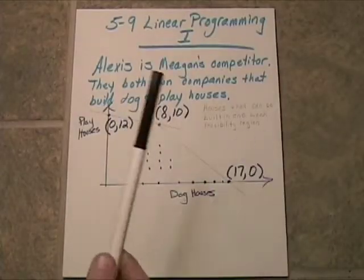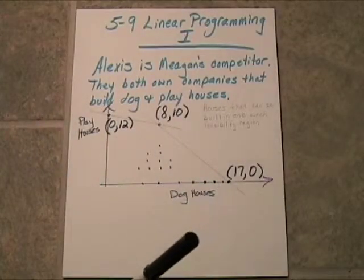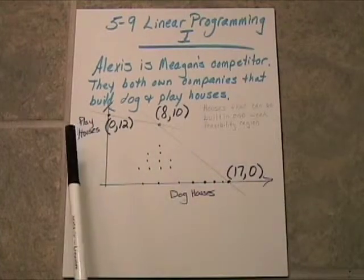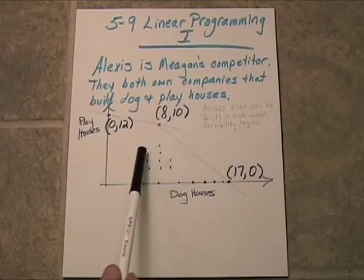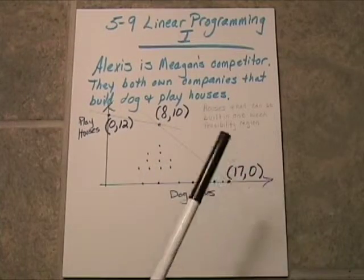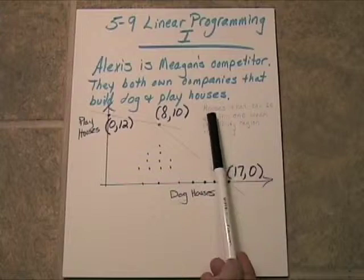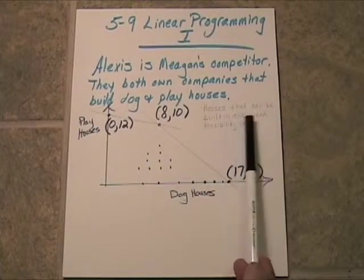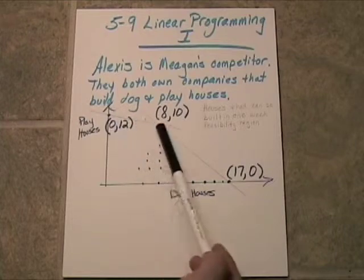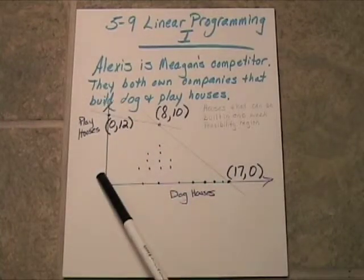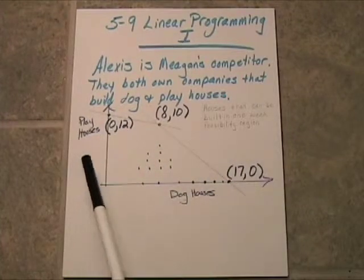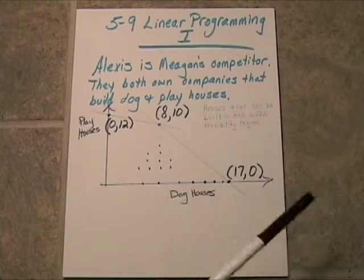The feasible region that's described by Alexis's carpenters and painters. And again, it is a discrete graph, so we'll have discrete points because this is the number of houses that can be built in one week. This is the feasibility region. Everything underneath these lines and bounded by the x and y axis, because we can't have negative houses here.